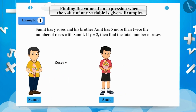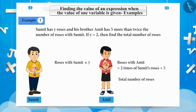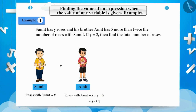As we know, the number of roses Sumit has is y. And his brother Amit has 5 more than twice the number of roses than Sumit. Therefore, the total number of roses with Amit is equal to 2y plus 5. The total number of roses will be y plus 2y plus 5. By simplifying this expression, we get 3y plus 5.